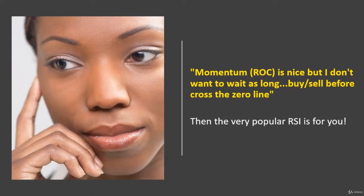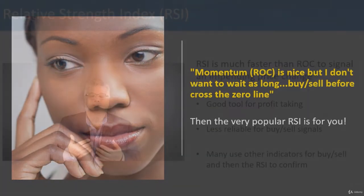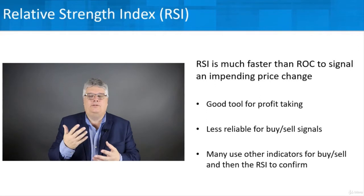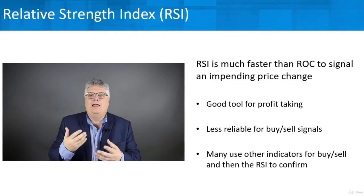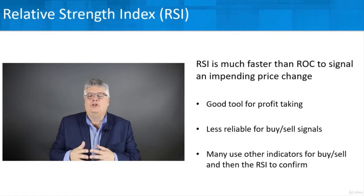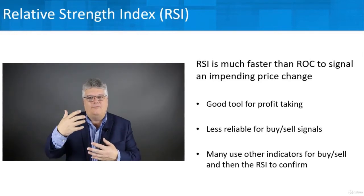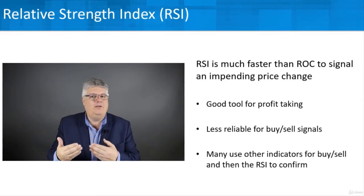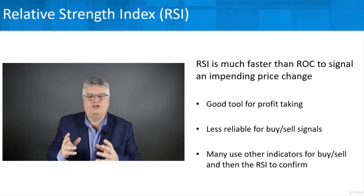You may be saying to yourself, momentum or rate of change is nice, but I don't want to wait as long to buy or sell before it crosses the zero line — I want to get in a little sooner. If that's true, then the very popular RSI is for you. RSI, or Relative Strength Index, is a momentum indicator, and it's much faster than rate of change or traditional momentum as a signal that an impending price change may be happening.